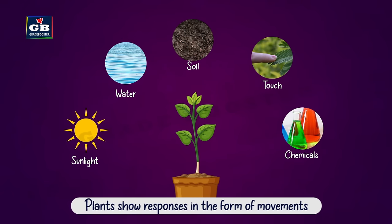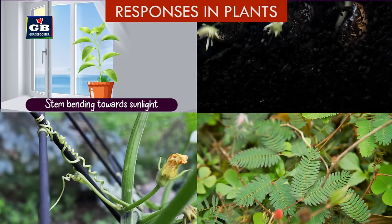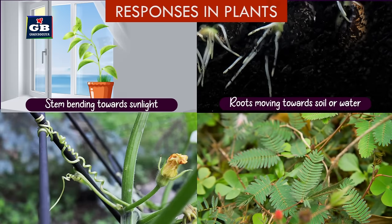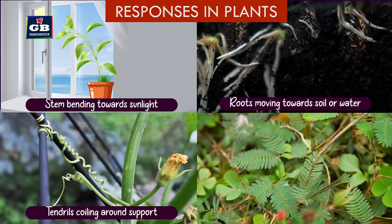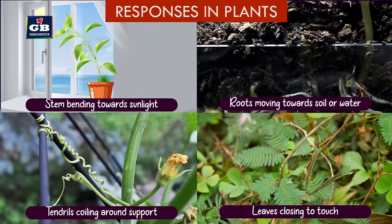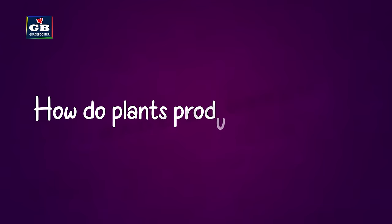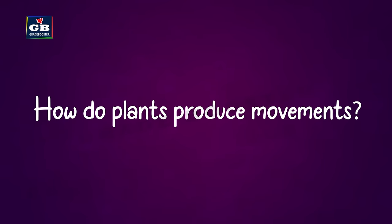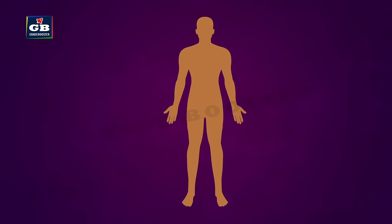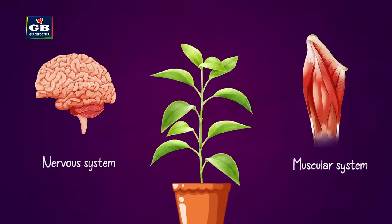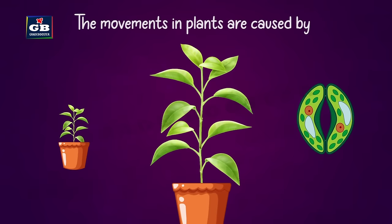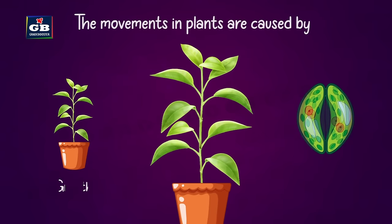Most plant responses are in the form of movements — for example, stems bending towards sunlight, roots growing towards soil or water, tendrils of plants coiling around a support, and the closing of leaves of the touch-me-not plant when touched. Animals produce movements with the help of the nervous system and muscular system, but plants have neither.